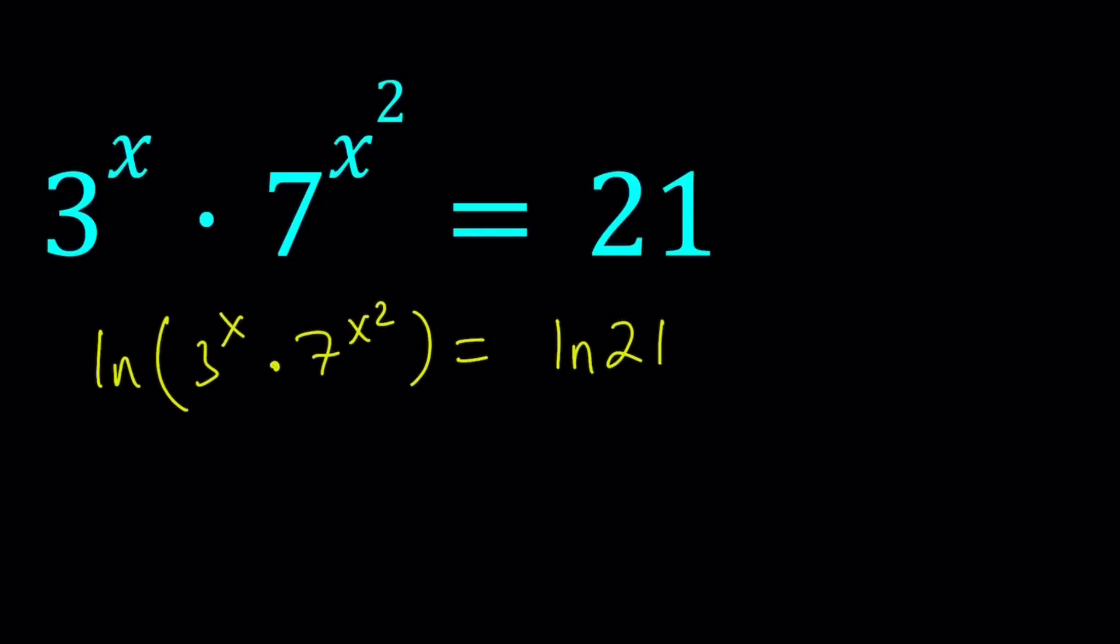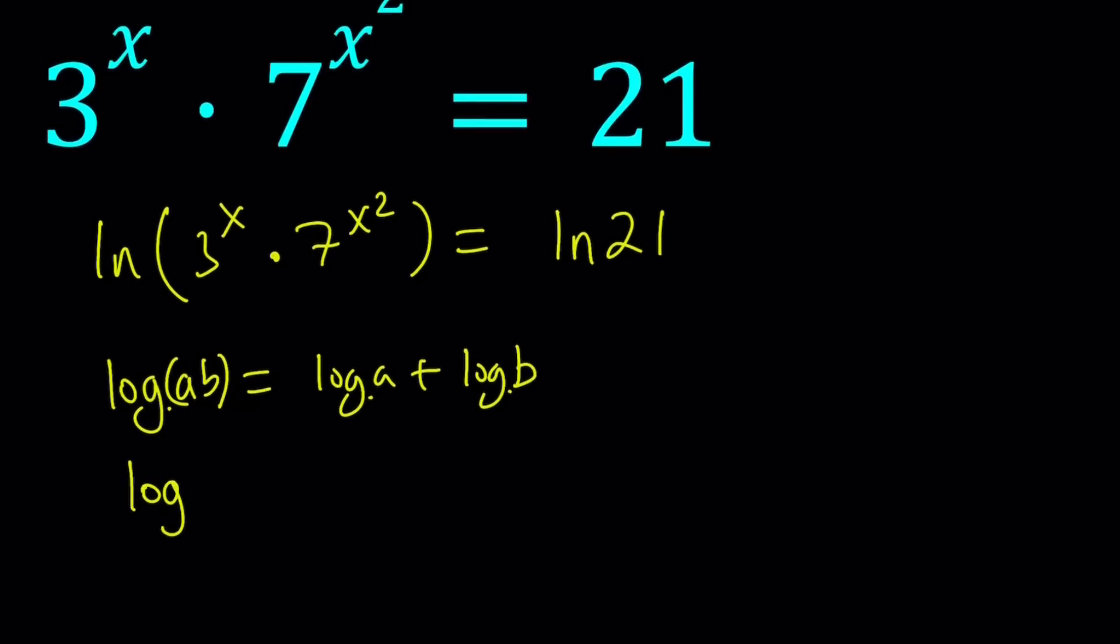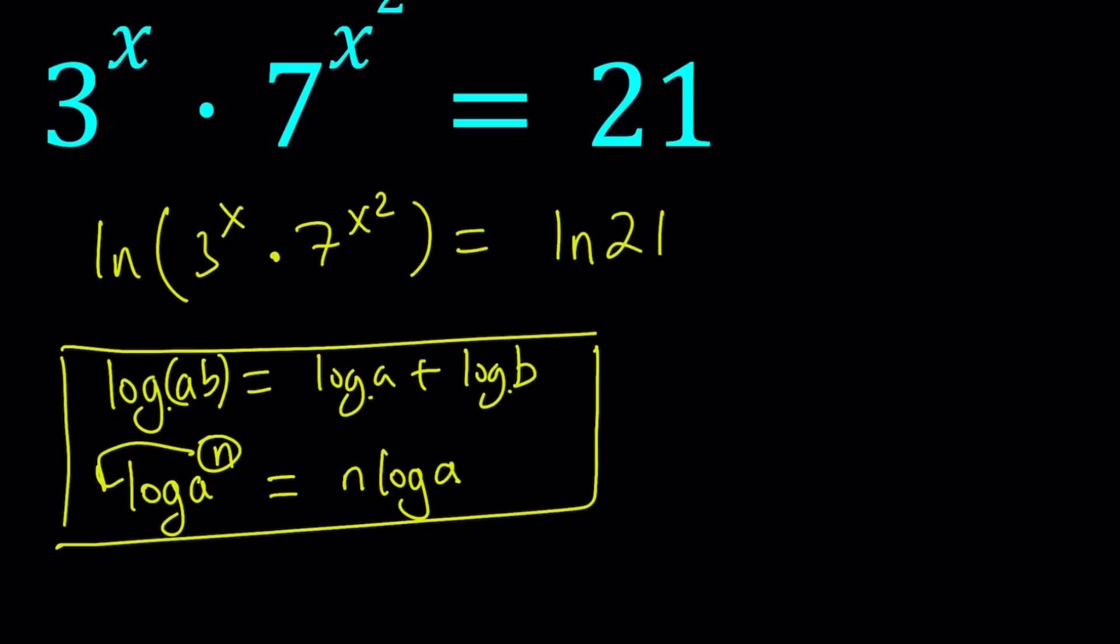Now we're going to be using properties of logs. One of them is the product property, which can be written as basically log AB equals log A plus log B. Where this log can be in any base. You can change the base, but they all have to be the same base. Or we have a power property, which says if you have something like log A to the N, you can move this N to the front, which you can write as N times log A. So these properties, of course there's more, like change of base and so on and so forth. But they're very helpful in solving these kinds of equations.